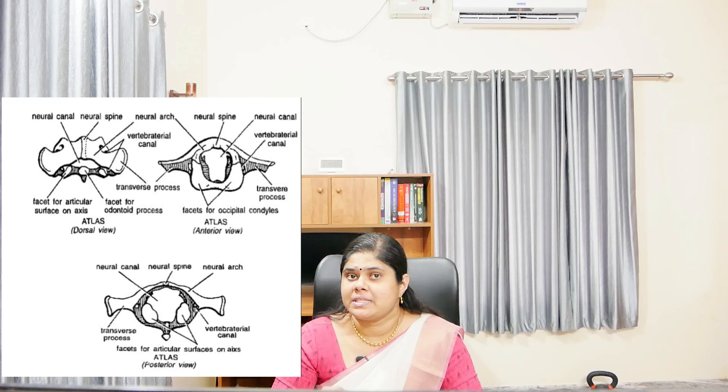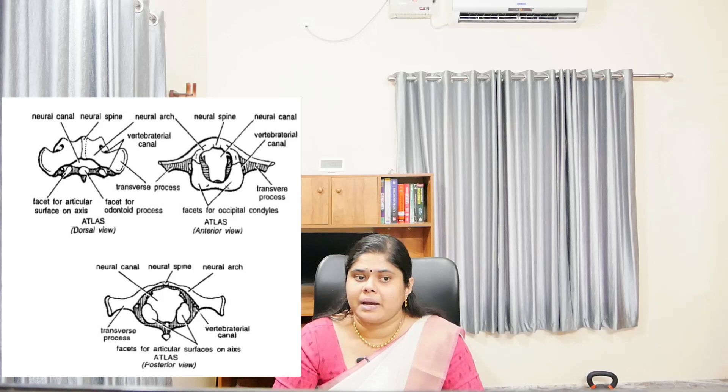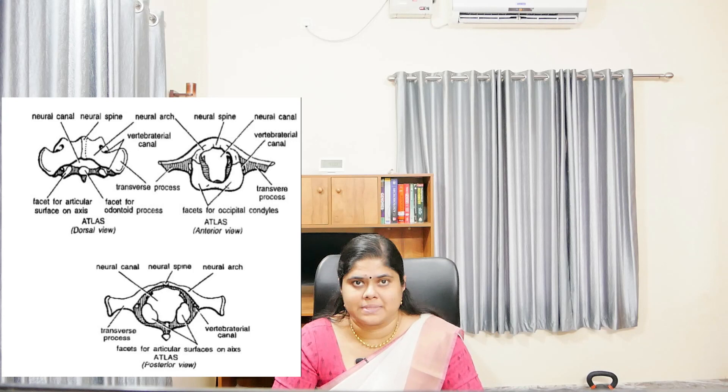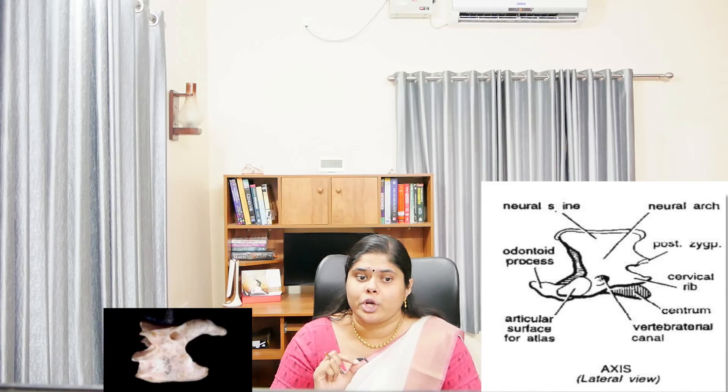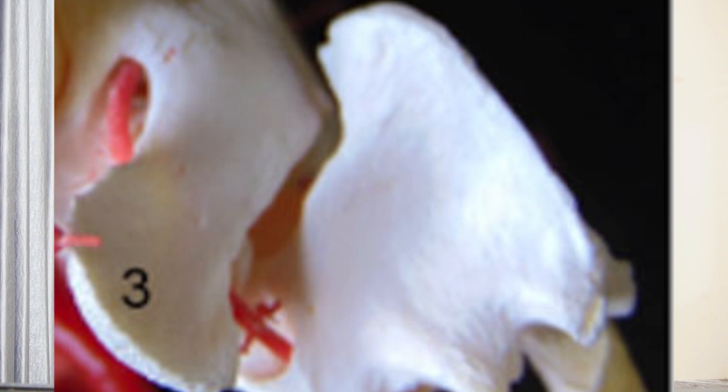The transverse processes of the atlas are broad, long and wing-like, and are perforated basally by the vertebrarterial canals. Moreover, zygapophyses are absent. The second vertebra, the axis, has a solid centrum with a peg-like forward process known as the odontoid process. It articulates with the atlas, and this atlanto-odontoid articulation acts as a pivot for the rotation of the head of the rabbit.